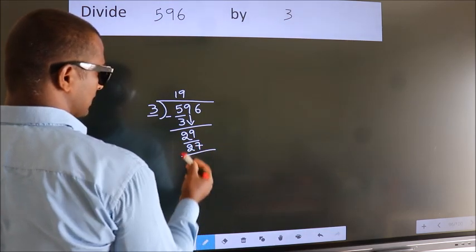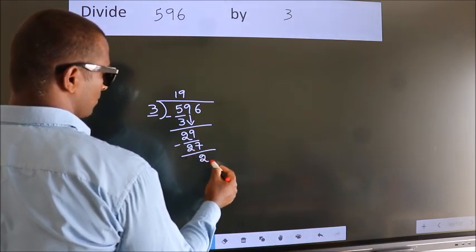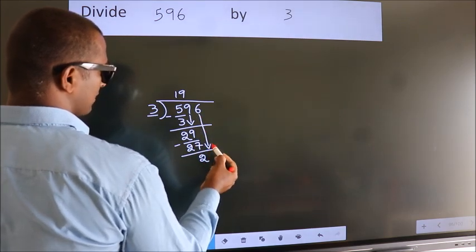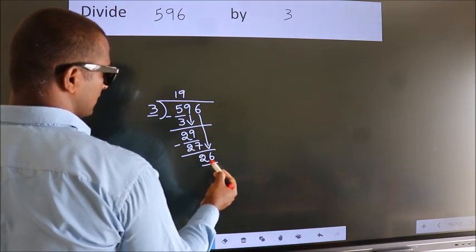Now, we subtract. We get 2. After this, bring down the beside number. So, 6 down. So, 26.